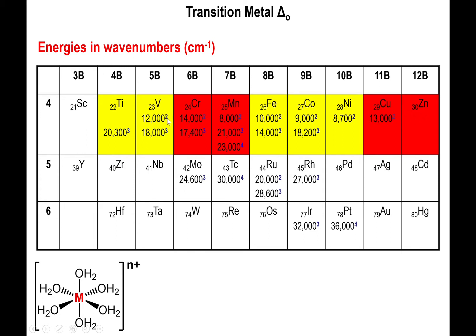The superscript number represents the charge of the metal. For vanadium 2+, the delta octahedral value is 12,000 inverse centimeters; for manganese 3+, it is 21,000 inverse centimeters. These are the wave numbers, forming a table of correlation with water as the only ligand present on the metal center.